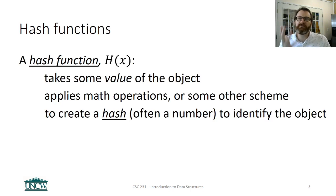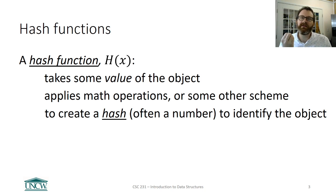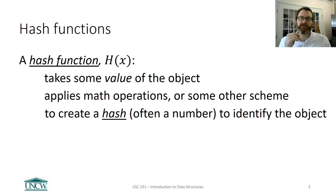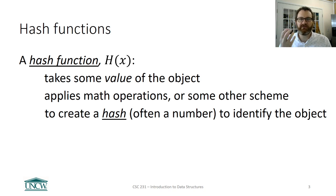So how do we do that? We have to define what is called a hash function. A hash function will take an input — a value of an object in Python, whether that object is an integer, a float, a string, or something else — and it's going to apply some mathematical operations. The output of the hash function is what we call the hash or hash value: an integer number used to identify or represent that object. So we're transforming some arbitrary object down into an integer in a fixed space.